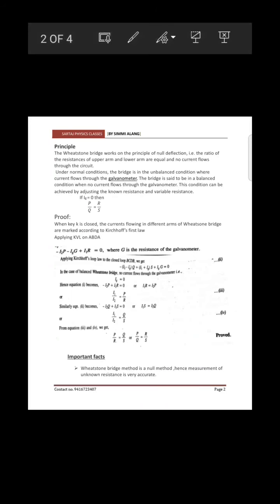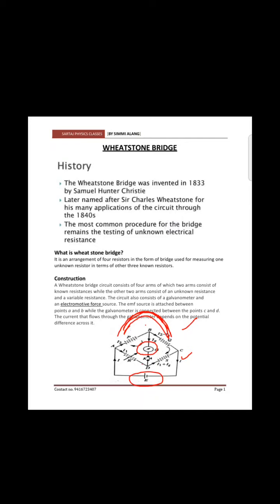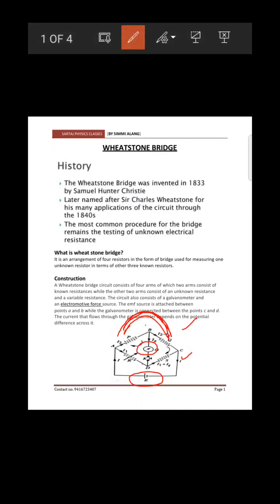The principle of the Wheatstone bridge: the ratio of the upper arm resistances P and Q should equal the ratio of the lower arm resistances R and S. If P/Q = R/S, then no current passes through the galvanometer at that condition.